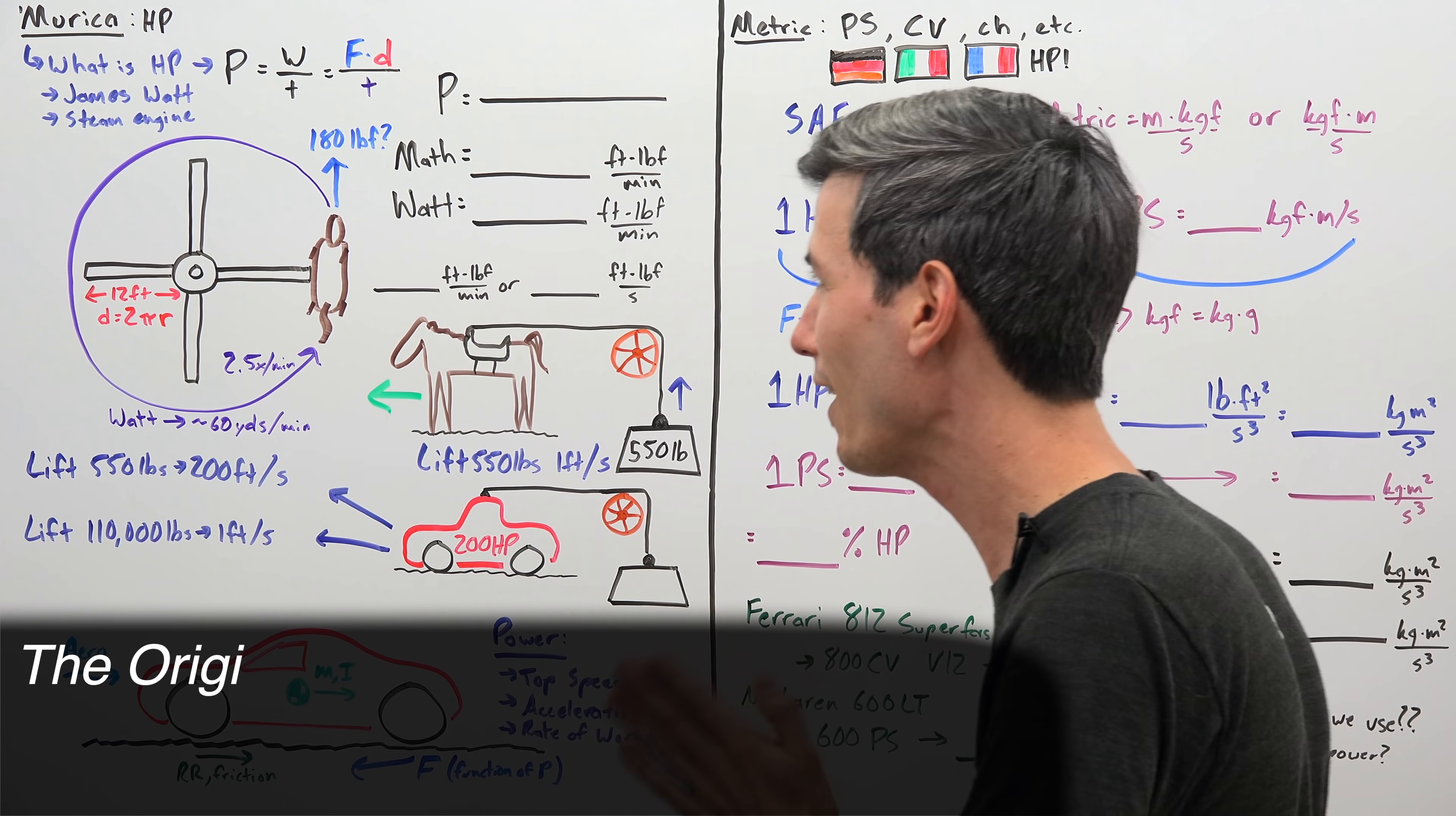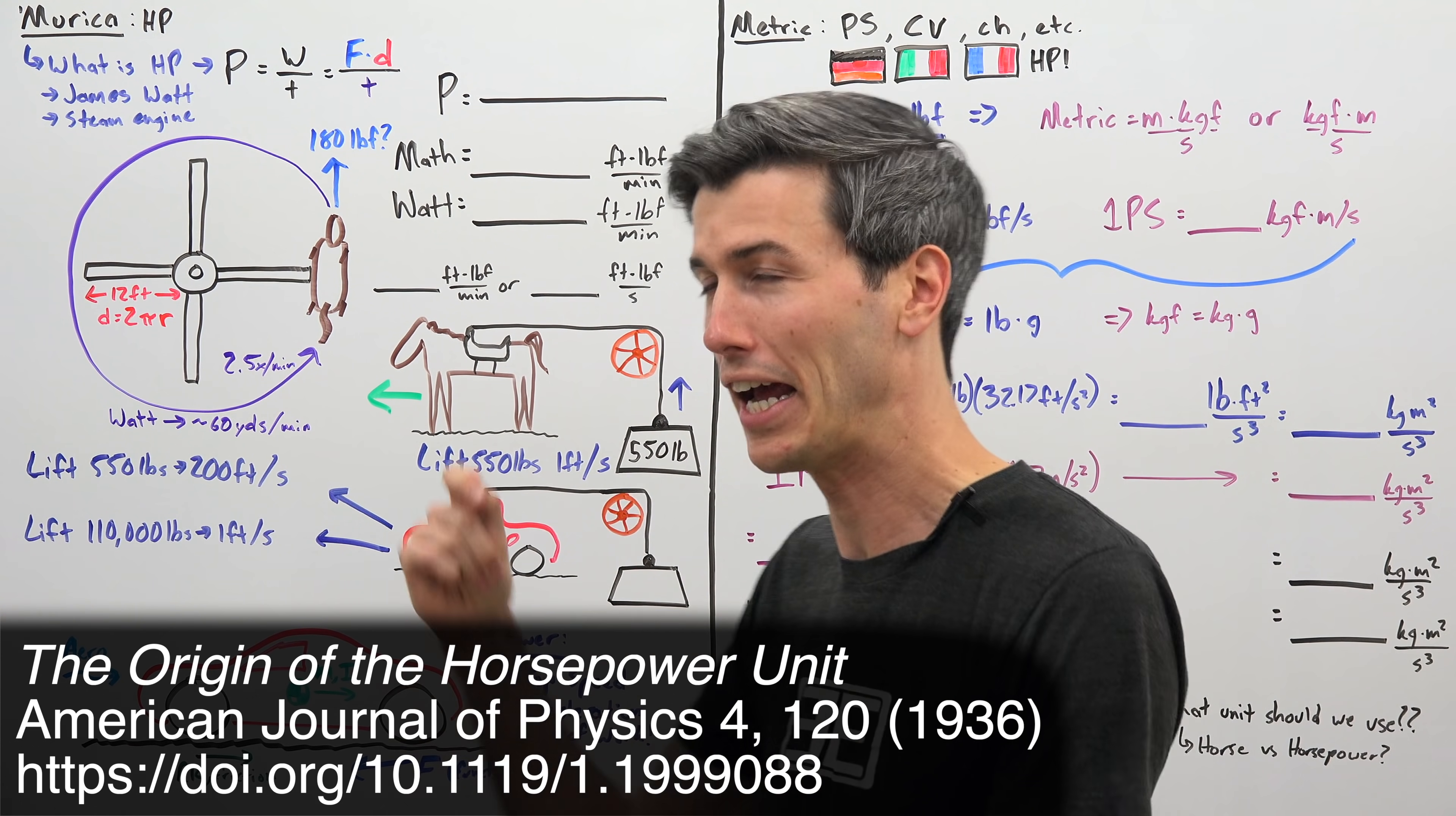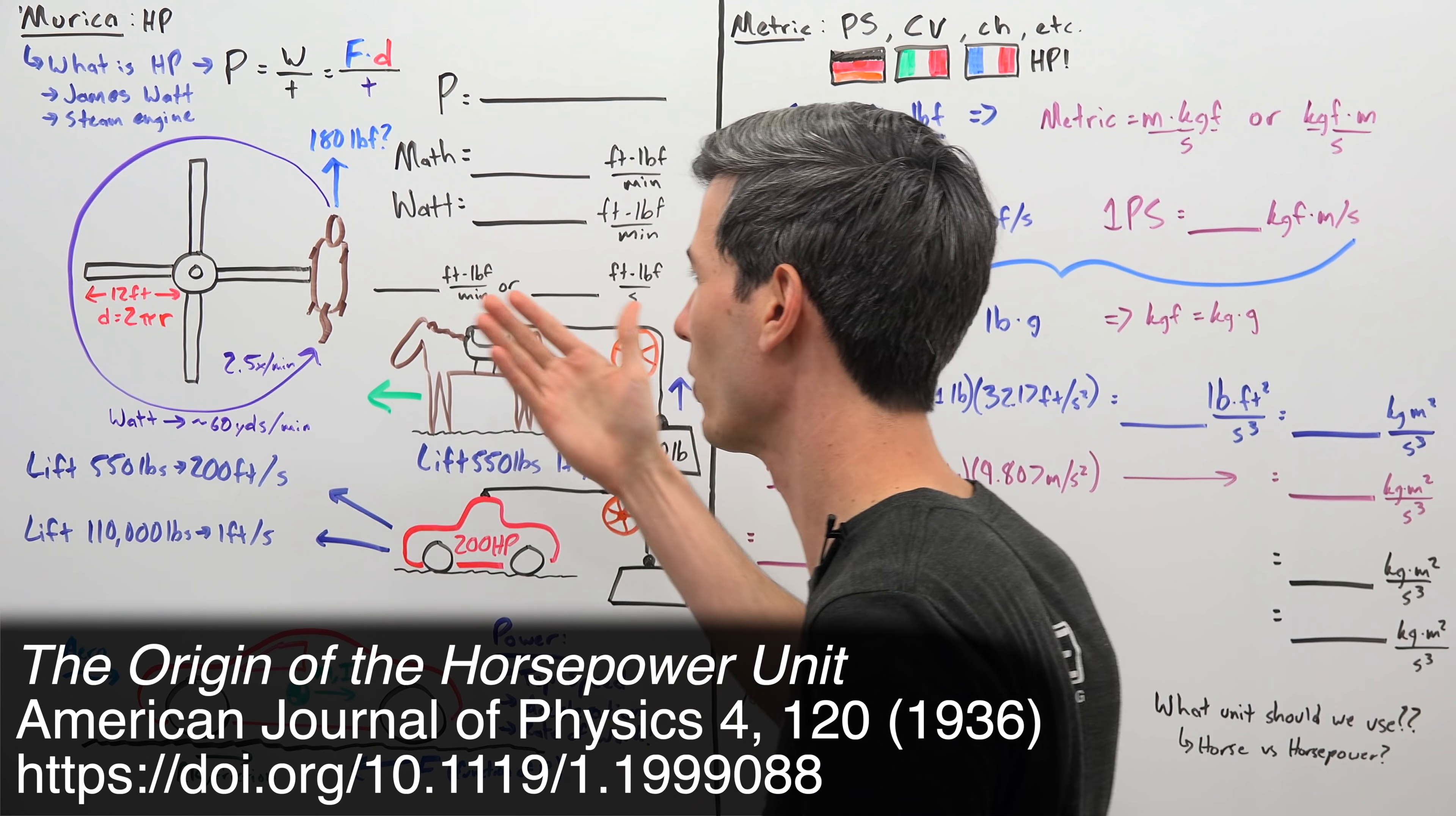And so there are many different stories out there and derivations of how this came to be, how this unit came to be, and many of them are not cited. I found a journal, American Journal of Physics, entry in 1936 that detailed how he came up with this and looked at his actual notes. And so that's what we're going to be using as the basis for how he derived this unit.